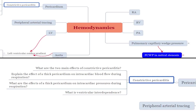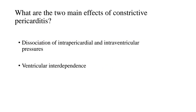Let's mind map today's video. We're going to be talking about the hemodynamics of the pericardium, most specifically the hemodynamics of constrictive pericarditis. For your active recall, these are the four questions. The first question is: what are the two main effects of constrictive pericarditis? Number one is dissociation of intrapericardial and intraventricular pressures, and second is ventricular interdependence.